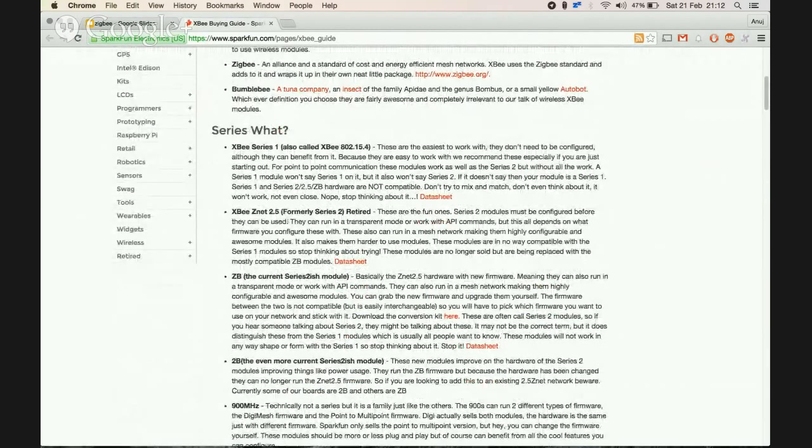Series 1 are the easiest to get started with because they work right out of the box. If you plug them into XCTU and configure the destination low and high addresses of the two XBees, they'll start talking to each other. Series 1 only supports point-to-point or star topology, so it doesn't have a lot of advanced networking features.